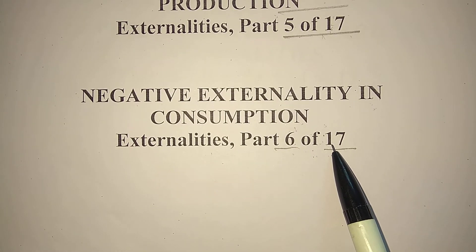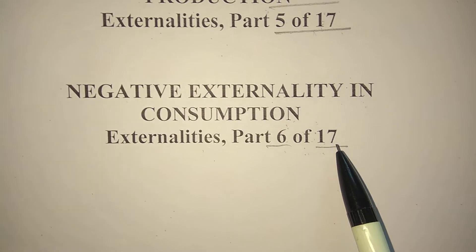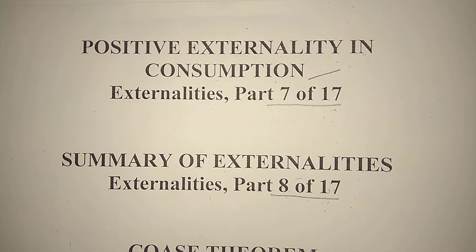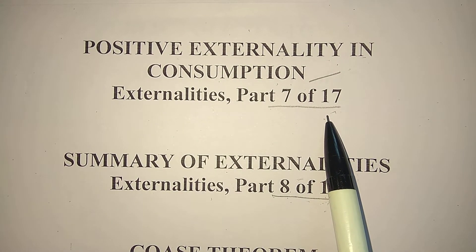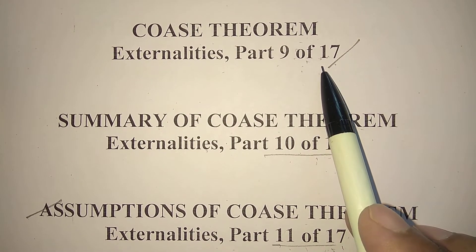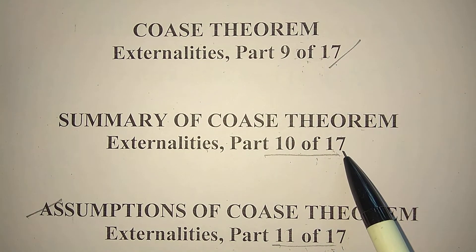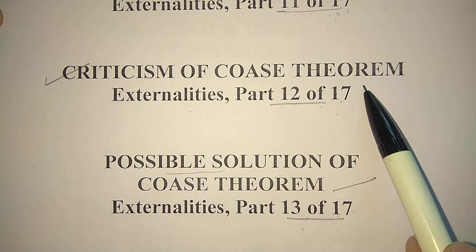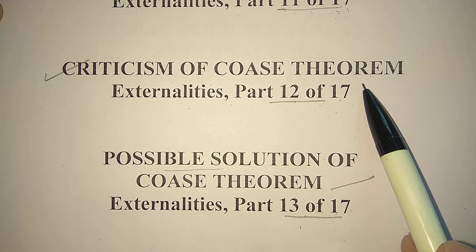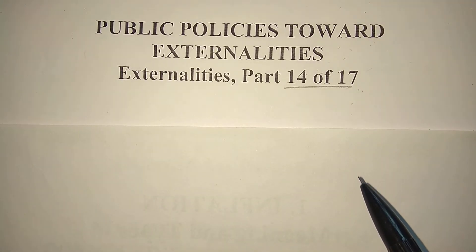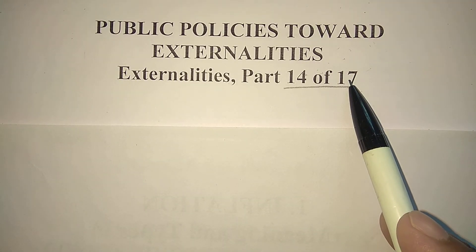Part 6 explains negative externality in consumption, part 7 explains positive externality in consumption, part 8 summarizes externalities. Part 9 explains the Coase theorem, part 10 summarizes Coase theorem, part 11 presents assumptions of Coase theorem, part 12 criticizes the Coase theorem, and part 13 presents possible solutions of the Coase theorem.